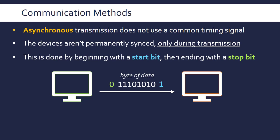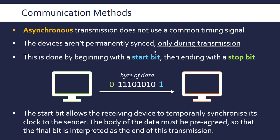The actual message has to be a set length, so both devices must have agreed that a byte is going to be sent. The receiver can count the bits — it knows it's going to get 10 bits in total including the start and stop bits. When no data is being sent, the devices aren't synced at all; they each have separate clocks.